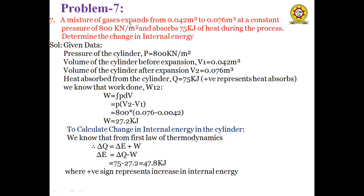Next problem: A mixture of gases expands from 0.042 m³ to 0.076 m³ at a constant pressure of 800 kN/m² and absorbs 75 kJ of heat during the process. Find the change in internal energy. Given: P = 800 kN/m², V1 = 0.042 m³, V2 = 0.076 m³, Q = +75 kJ.